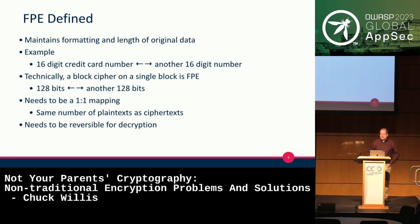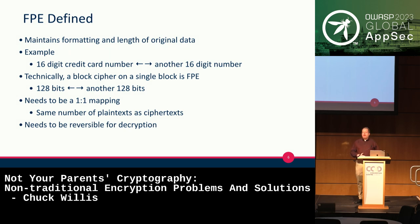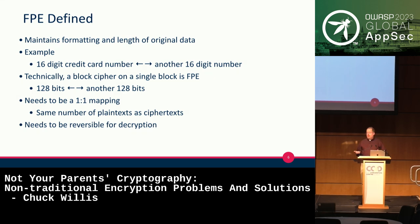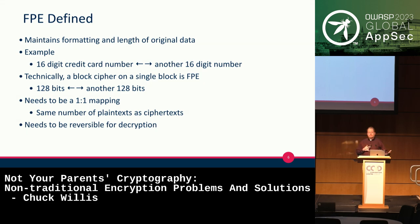The idea of format-preserving encryption is that you want to maintain the format and length of your original data. A common example is a credit card number — 16 digits. With format-preserving encryption, you convert it into another 16-digit number. A block cipher is technically doing something similar — bits to bits. But due to the pigeonhole problem, there needs to be a one-to-one mapping because there are exactly as many ciphertexts as plaintexts, and it also needs to be reversible.